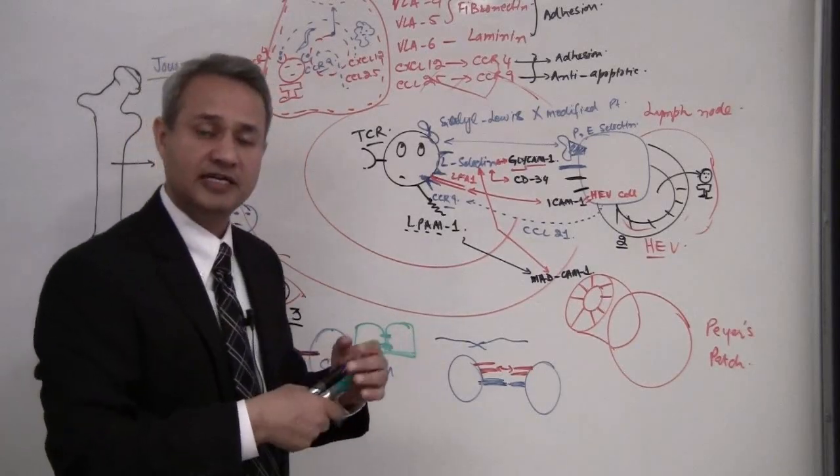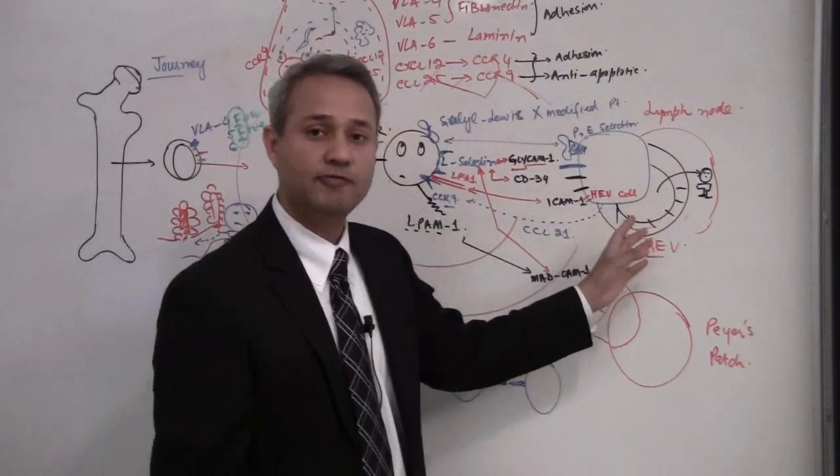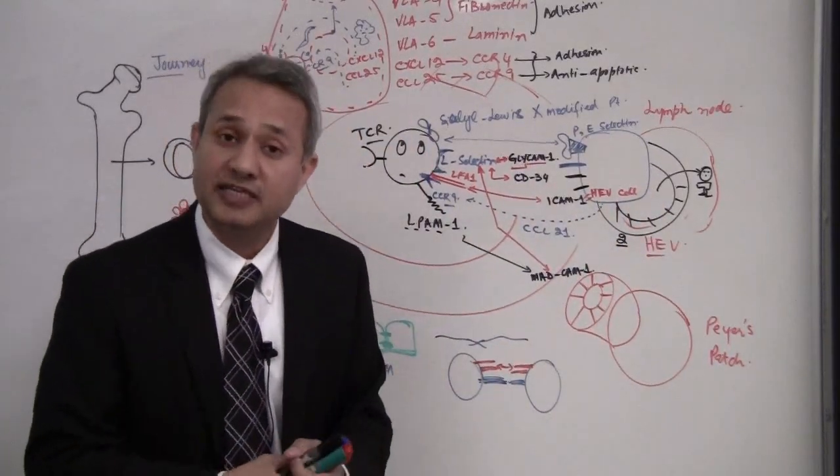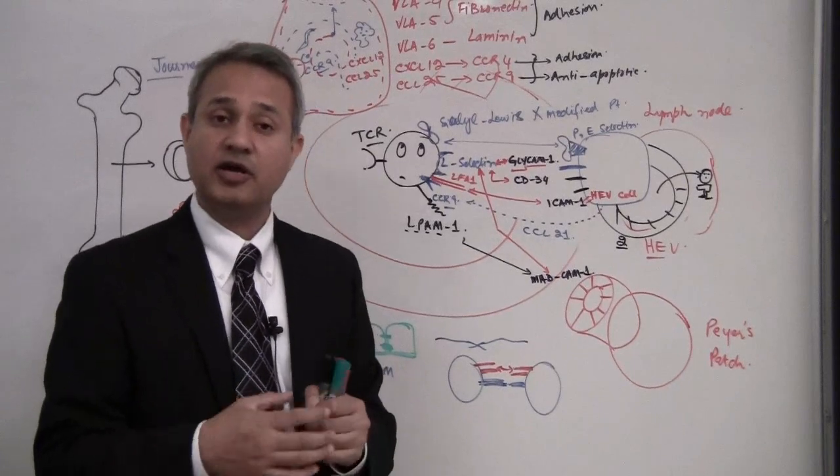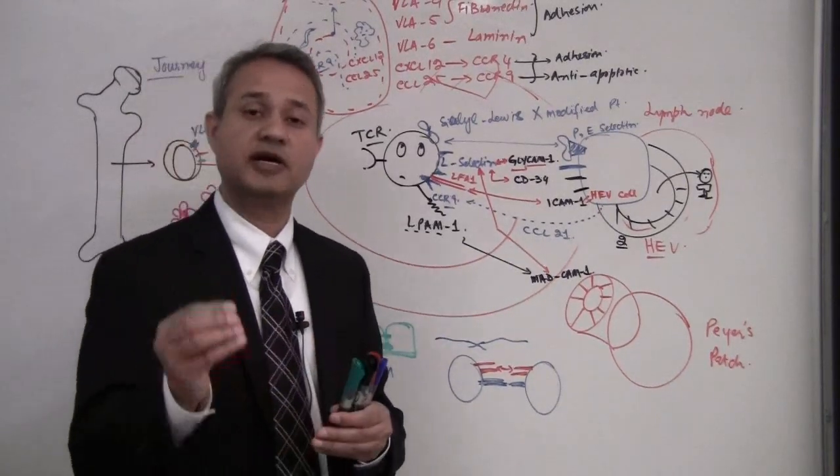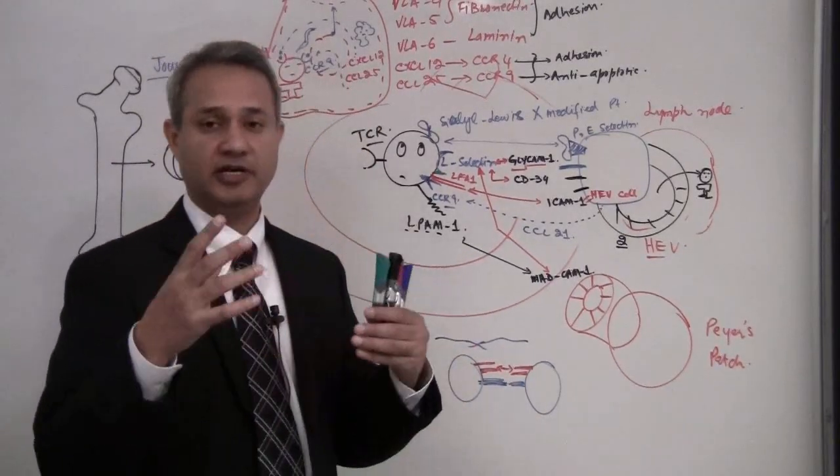If it cannot find any dendritic cell containing any antigen, it would jump out of that lymph node and go to another lymph node. So it would keep doing this as long as it can find an antigen, as long as it lives. It would keep going from lymph node to lymph node trying to find an antigen.